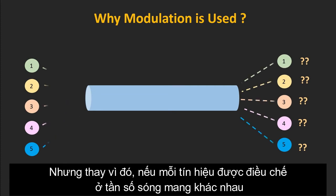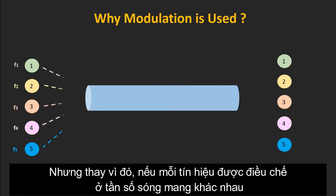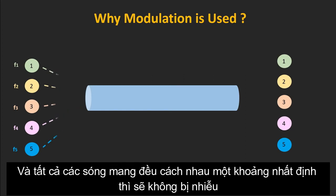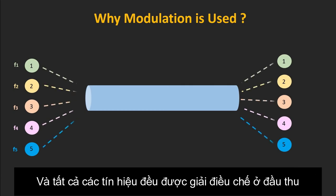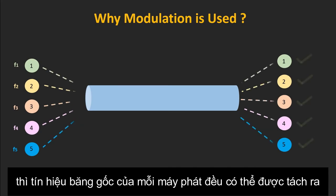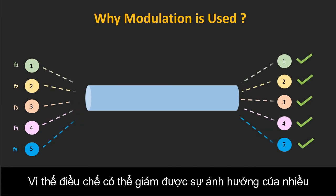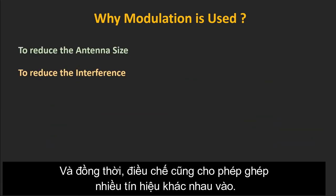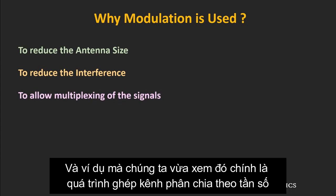Instead, if each signal is modulated at a different carrier frequency, and all carrier frequencies are relatively far away from each other, then there won't be any interference. All the signals can be demodulated at the receiver and the message signals of each transmitter can be retrieved. So using modulation, interference can be reduced. At the same time, multiplexing of different signals is also possible. The example shown earlier is that of frequency division multiplexing.